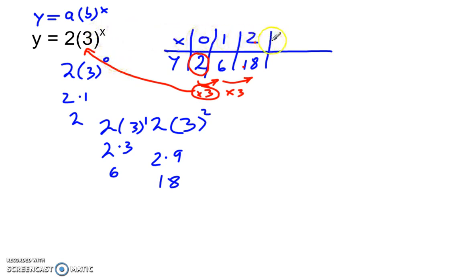So, x is whatever term number and then a is when x is 0 and b is the common ratio.